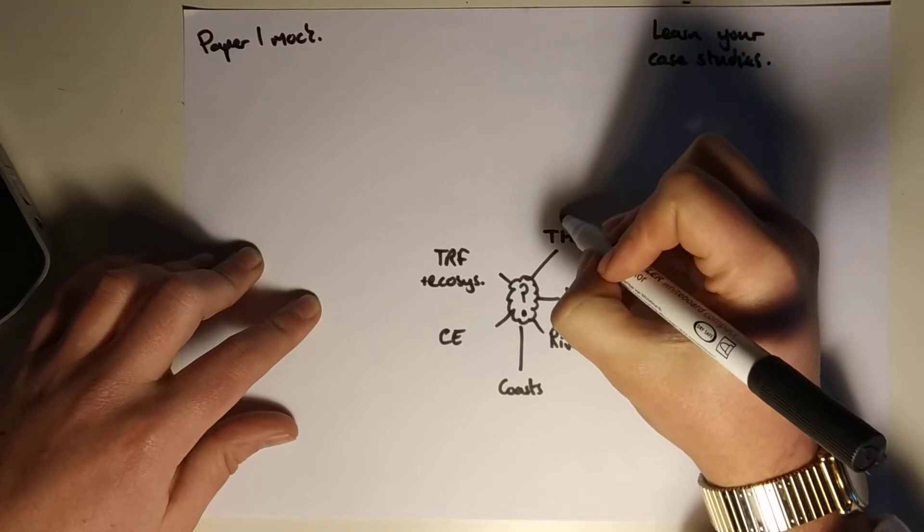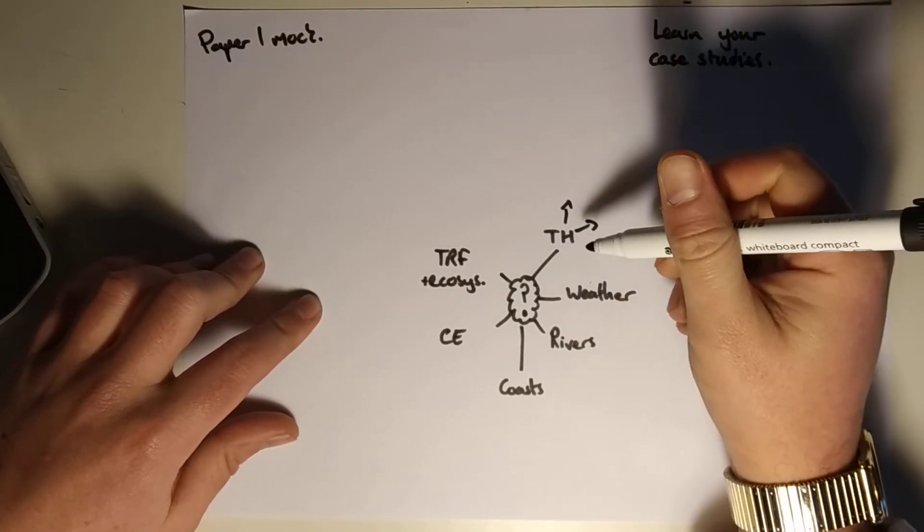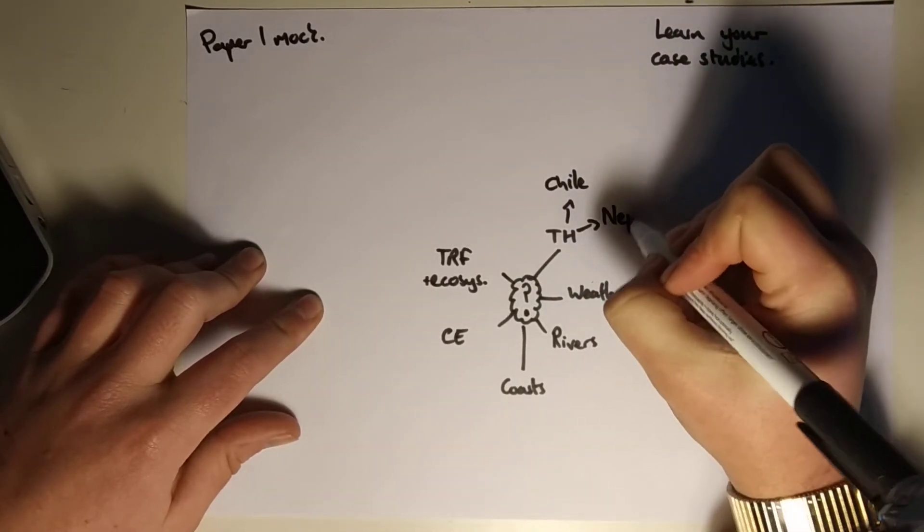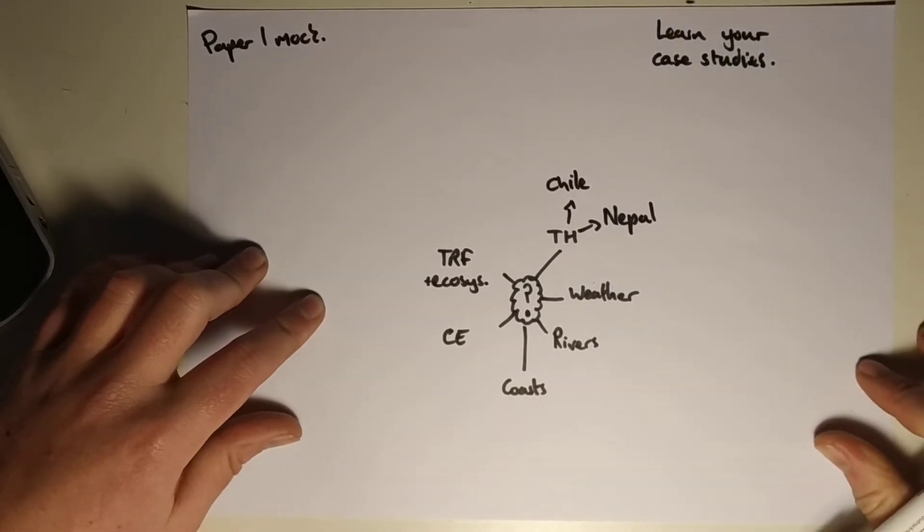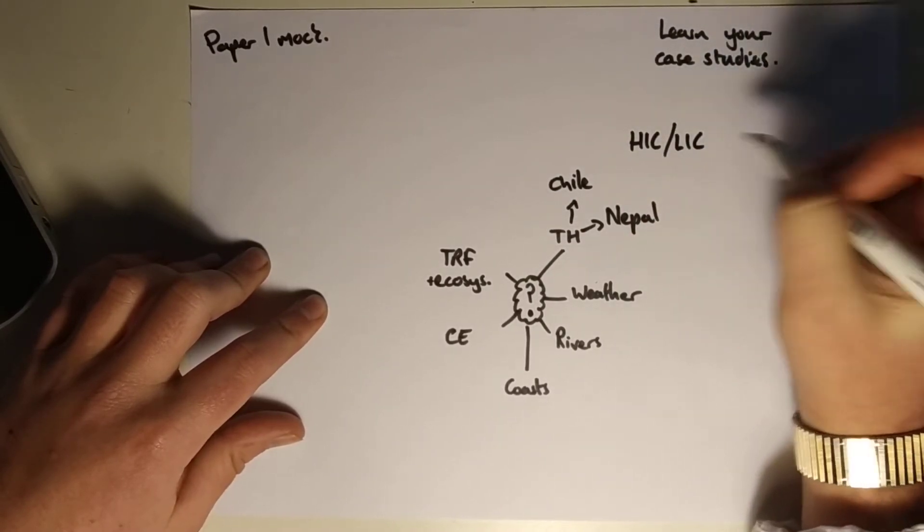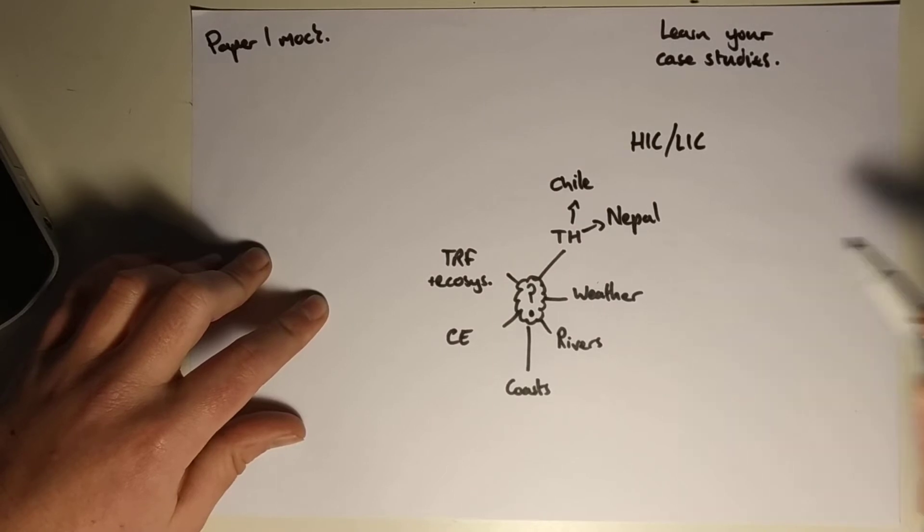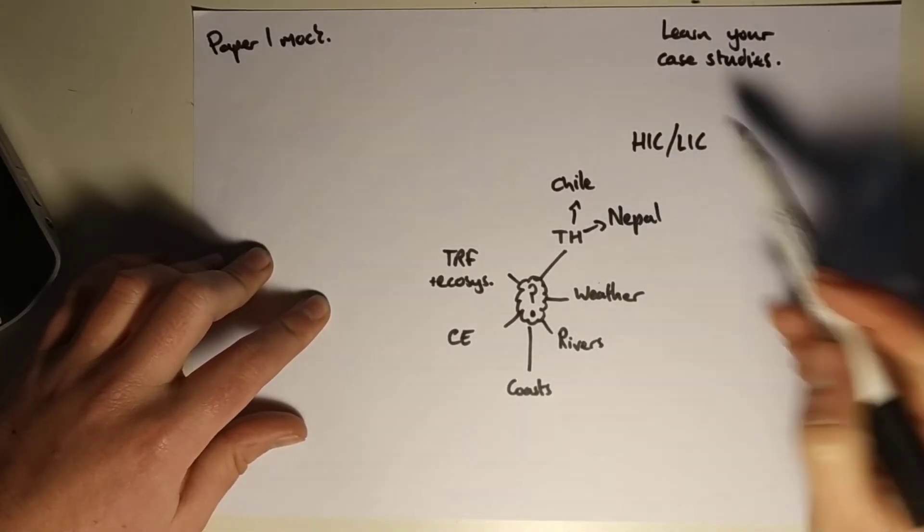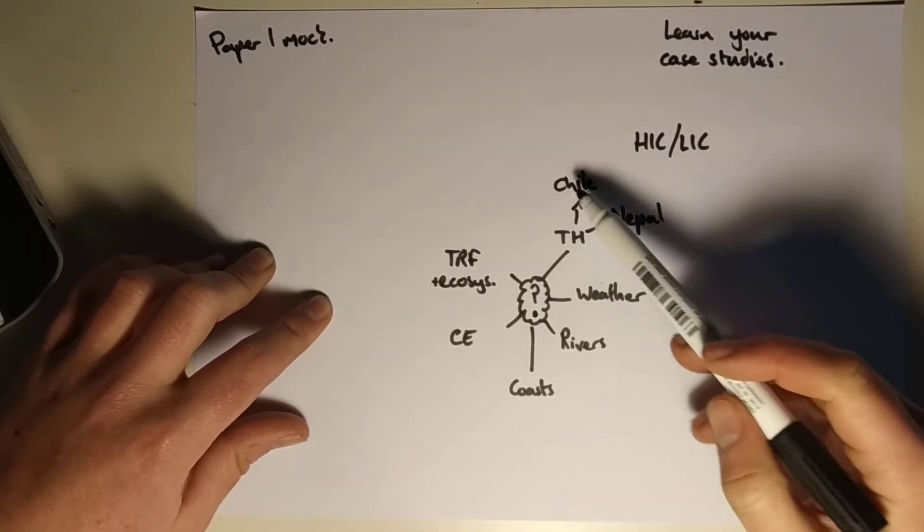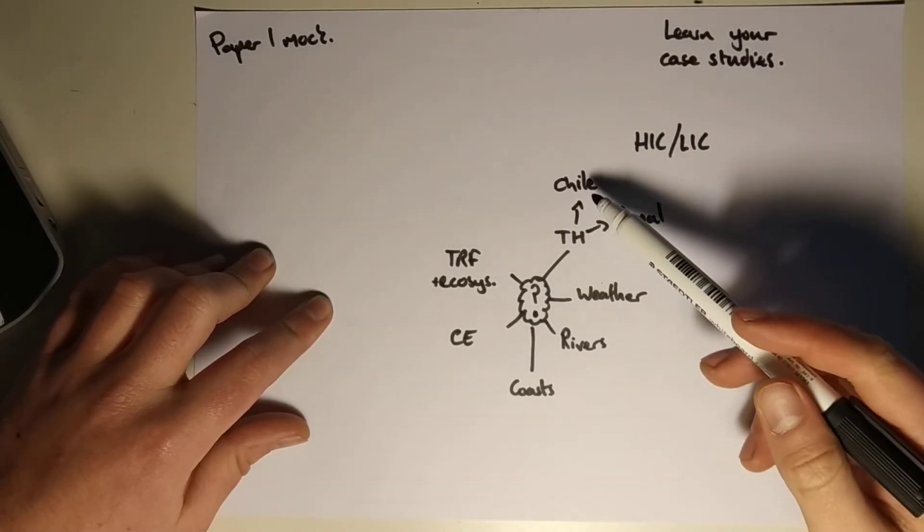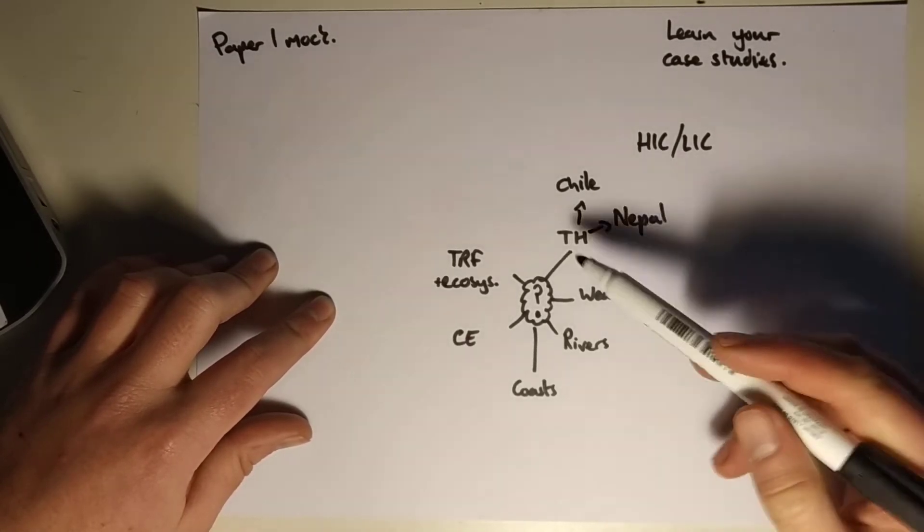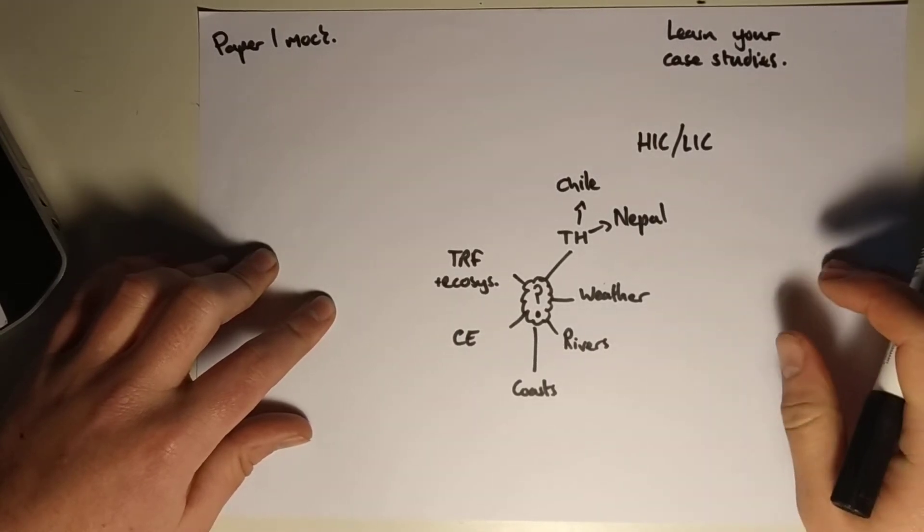So for tectonic hazards the key case studies are Chile and Nepal. In your revision guides we've got the key information for Chile and Nepal. Essentially it's looking at HIC, so Chile versus LIC, so high income country versus low income country for Nepal, and how the tectonic hazards impact those two places differently. In Chile you see a greater amount of economic impacts because it's an HIC, whereas in Nepal it's more of a humanitarian impact with more deaths. You can go back and research that yourself. The information is on your knowledge organiser.